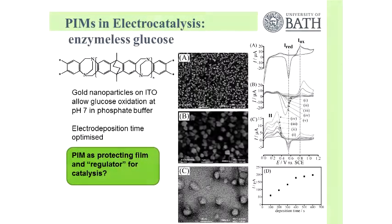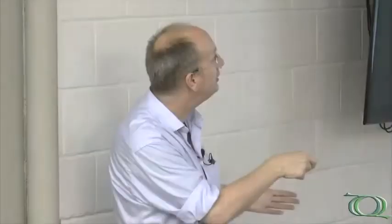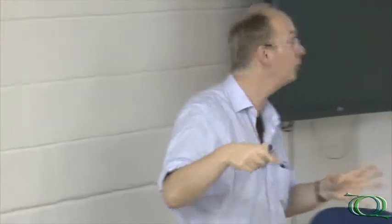Another catalyst we used — this is work from Neil and Jack Brown — uses gold nanoparticles. It turns out we can use this polymer to control access to the catalyst. Gold nanoparticles are quite nice: you can make them and use them to oxidize glucose. Glucose oxidation is important in sensor processes. So it's possible to achieve glucose oxidation at pH 7 in phosphate buffer with these very active gold particles.